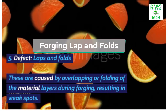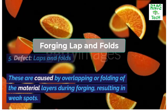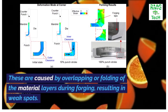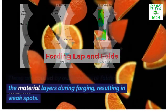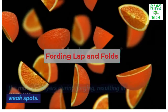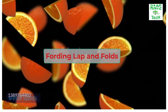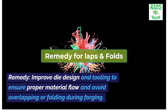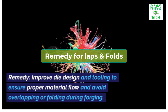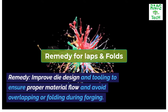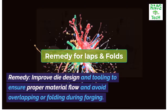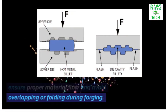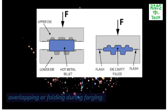Defect 5: Laps and folds. These are caused by overlapping or folding of the material layers during forging, resulting in weak spots. Remedy: Improve die design and tooling to ensure proper material flow and avoid overlapping or folding during forging.